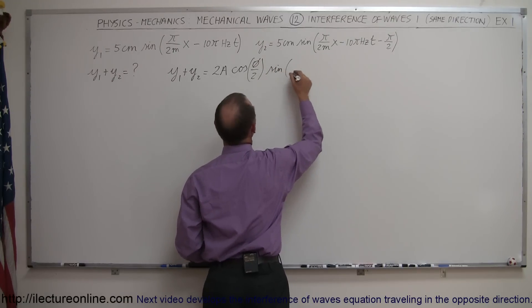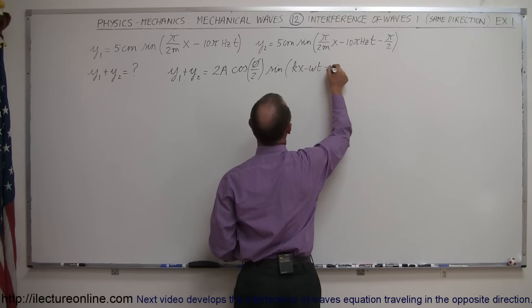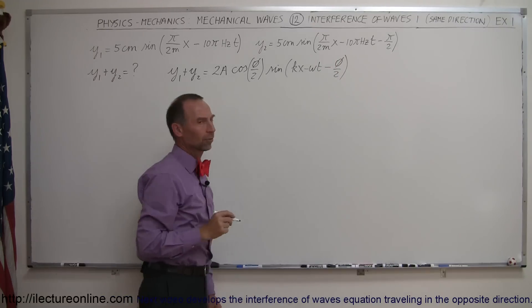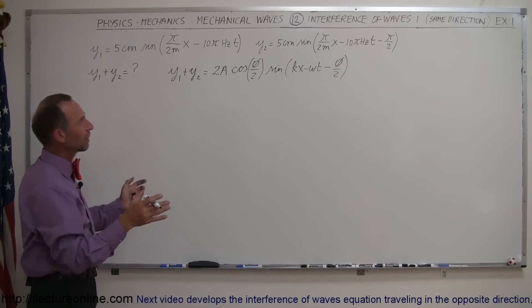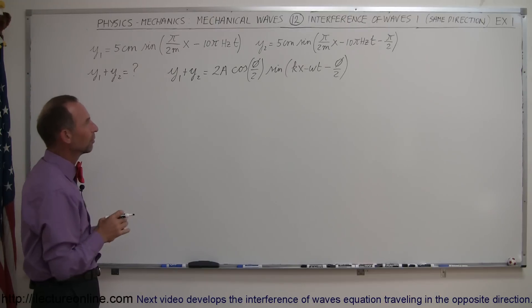Times the sine of kx minus omega t minus phi over 2. So it would mean that the maximum of that wave, of the combined wave, would occur at the halfway point between the two other phases.